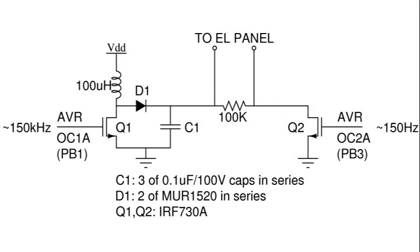That's basically how our circuit works. By pulsing the transistor Q1 on the left very quickly, we build up a big voltage across capacitor C1. Then, pulsing transistor Q2 on the right much more slowly, we periodically let this voltage be applied across the Electroluminescent panel or not.